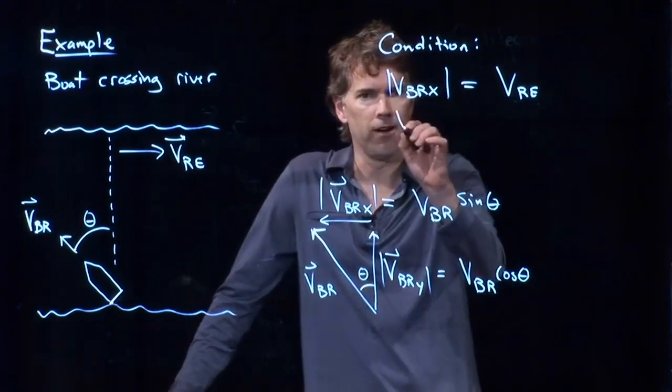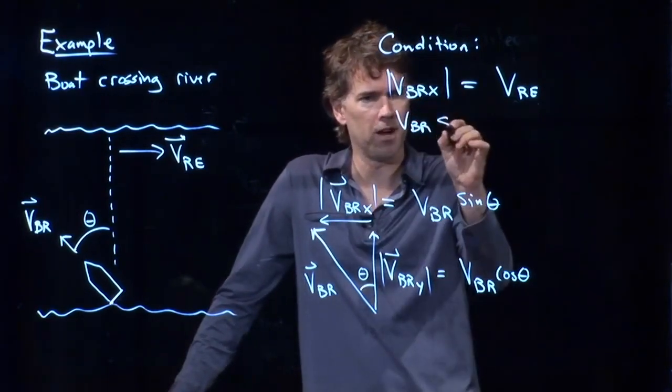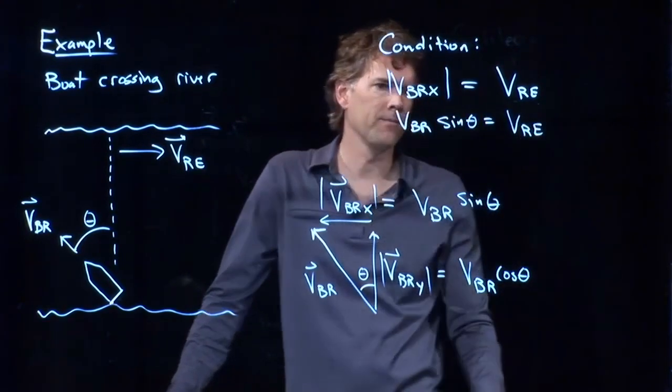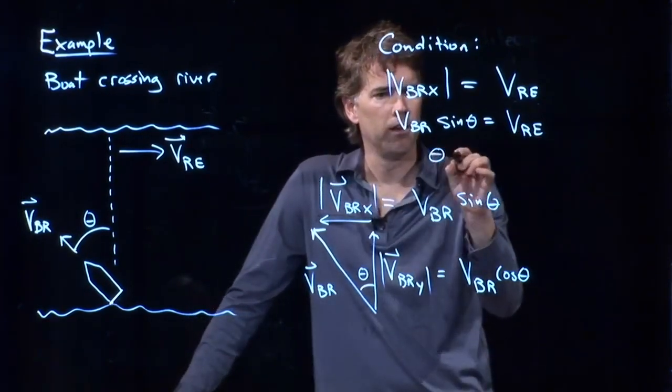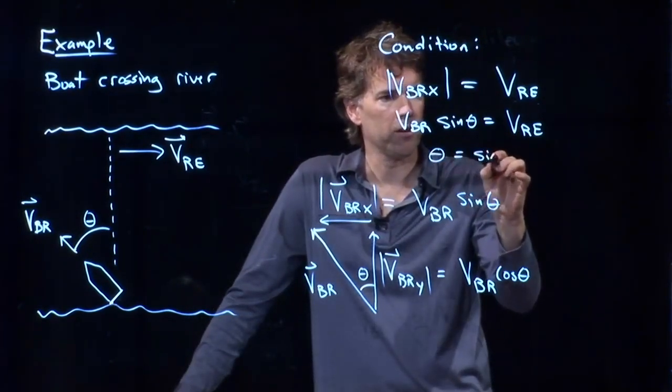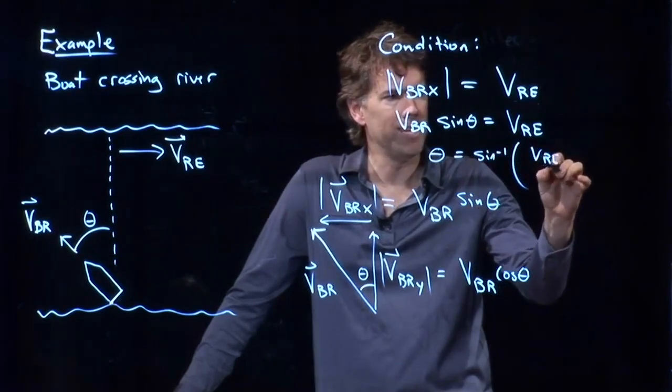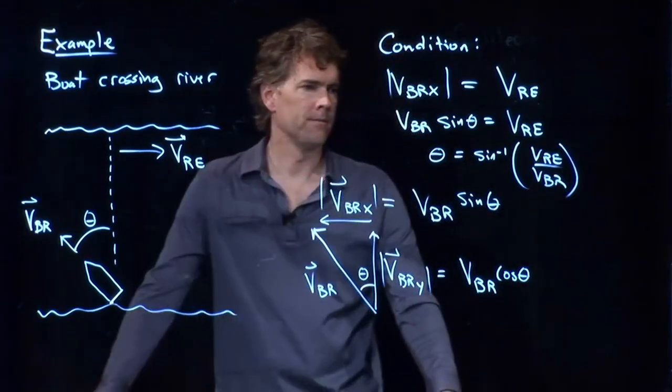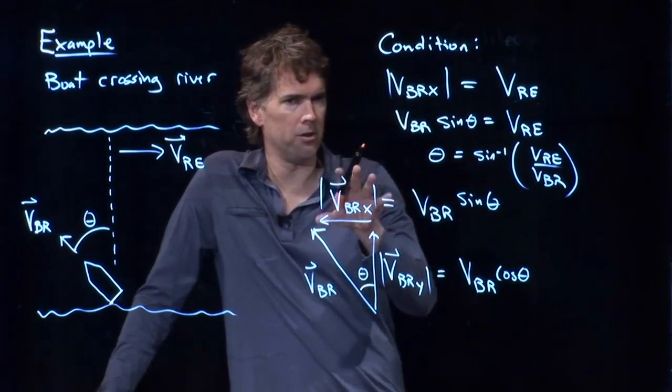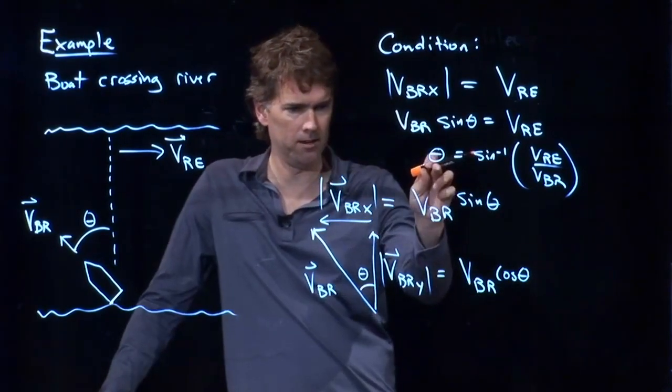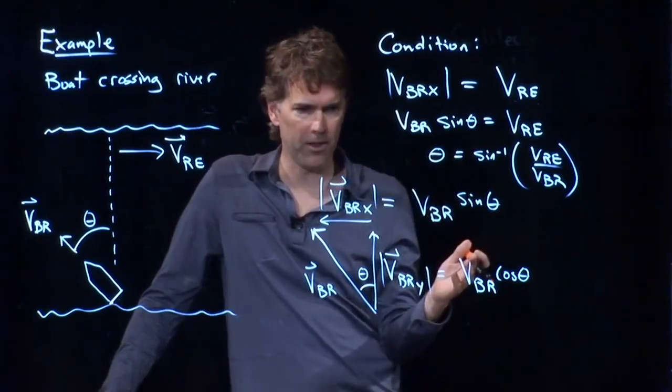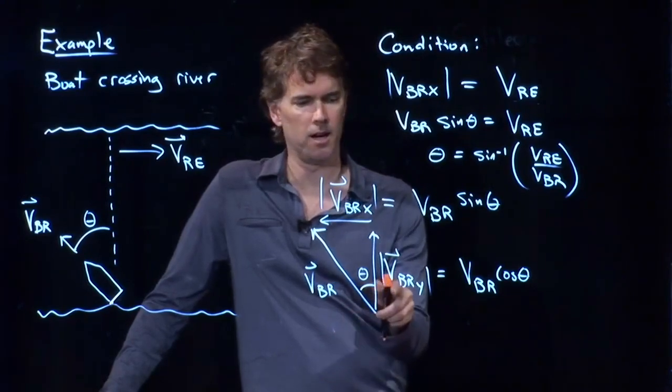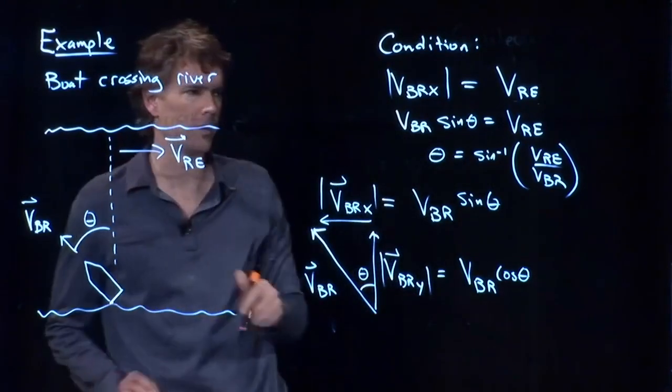All right. So look. We've got VBR times sine of theta equals VRE. And now you can calculate theta. Theta is the arc sine of VRE over VBR. And so using trig, it allowed us to, in fact, first get theta, and once you get theta, then you can go back and calculate this quantity, VBE, the velocity of the boat going across the river.